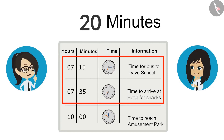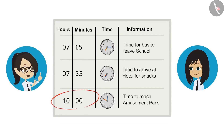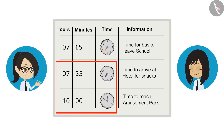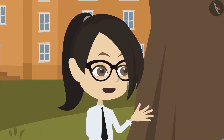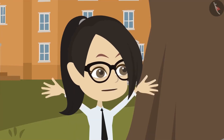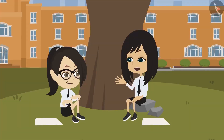We know that we have to reach the amusement park at 10 o'clock. If we also know how long it takes to go from the hotel to the amusement park, we will be able to tell at what time we should leave the hotel. Sir has said it takes 55 minutes from the hotel to reach the amusement park. Let's draw 10 o'clock on the clock and then rewind the minute hand 55 minutes behind. The difference from one number to another is 5.